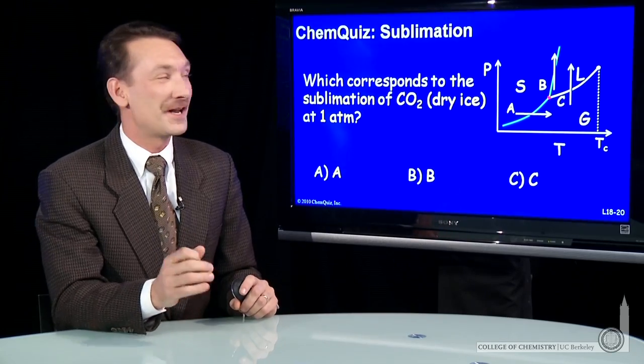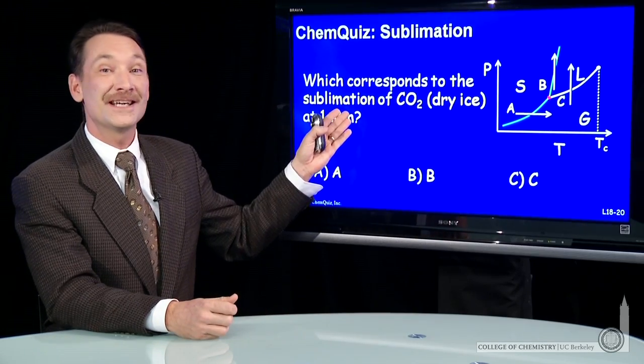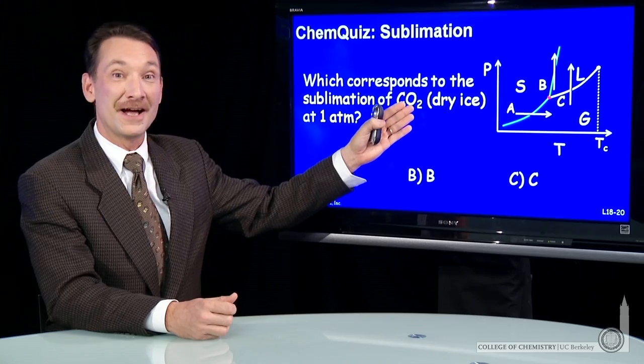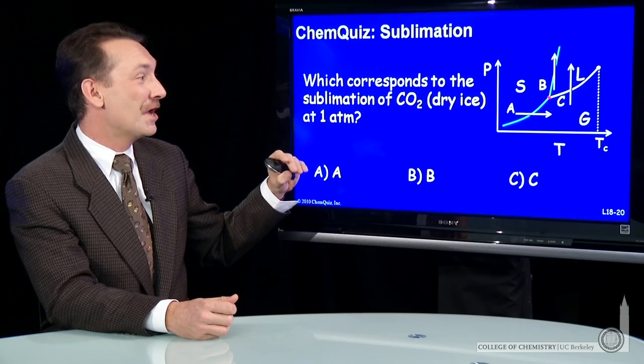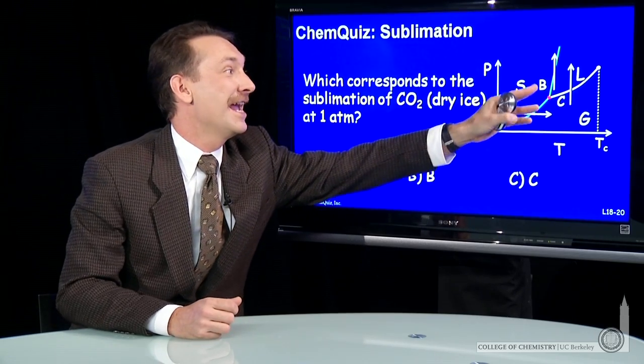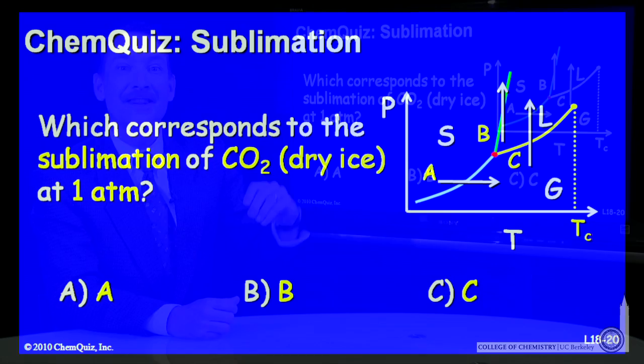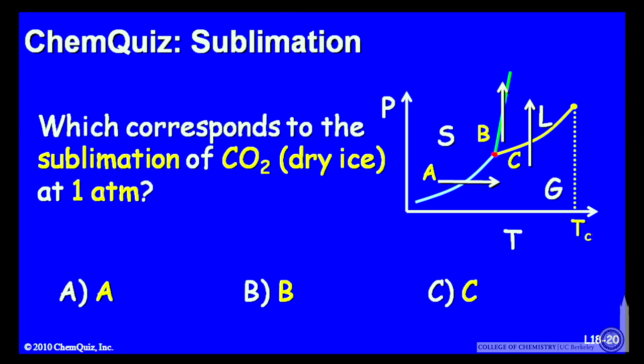Let's look at the phase diagram of carbon dioxide and see if we can predict where the sublimation of carbon dioxide occurs at one atmosphere. We have three choices: line A, B, or C. Think about that for a minute and make a selection.